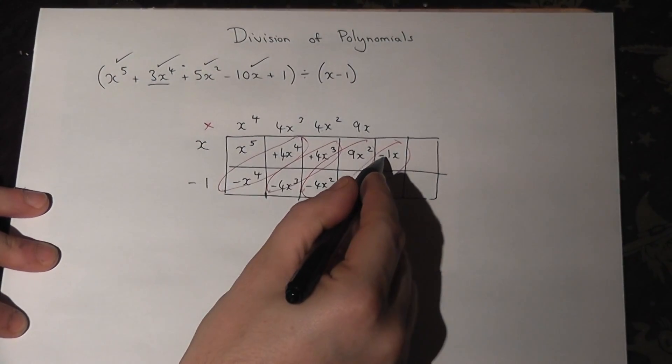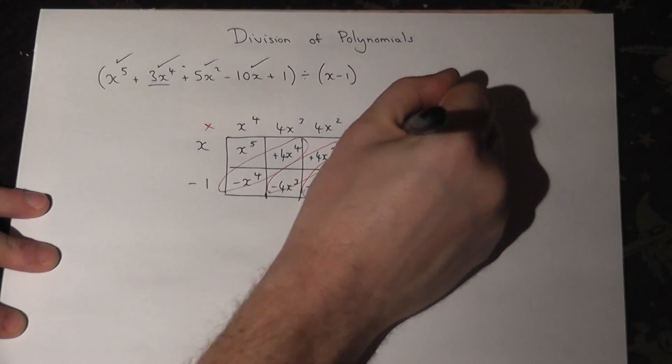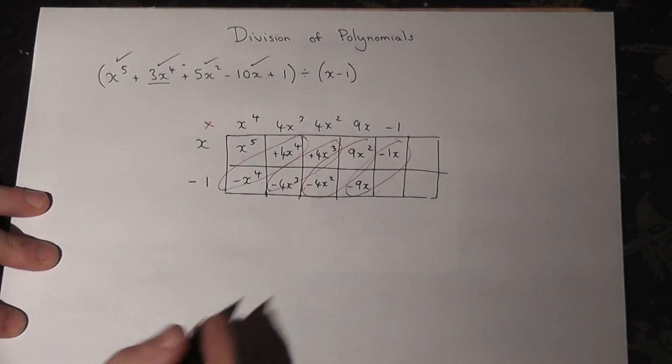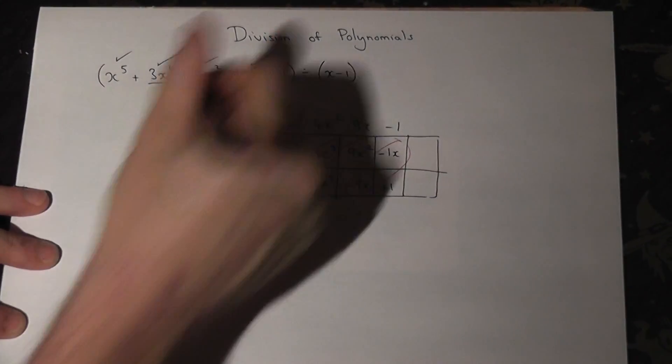But x times what is minus 1x? x times minus 1. And then minus 1 times minus 1 is plus 1. So that is now correct.